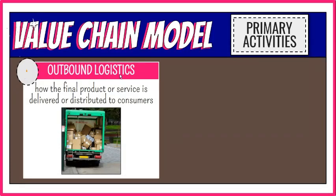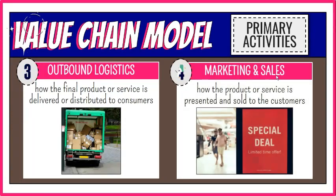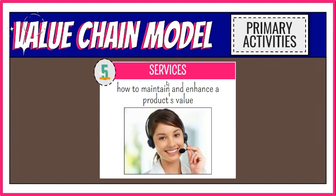Third, outbound logistics — this is how the final product or service is delivered or distributed to consumers. In this step, we take into account the shipping costs to consumers and order processing operations. Fourth, marketing and sales — this is how the product or service is presented and sold to customers. In this step, we find out the advertising, promotional, and selling costs. Fifth, services — this is the support an organization provides for the customer. It includes all the activities that maintain and enhance a product's value, such as customer support and warranty service. In this step, we look at the repair costs and product training costs.